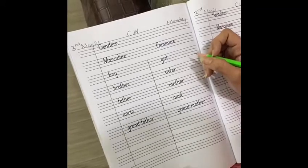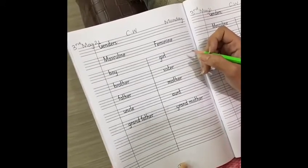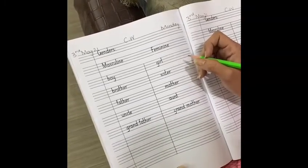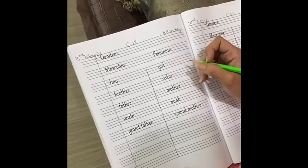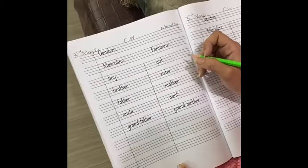Kids, male means he. Do you remember I told you during online classes that we use he for boys and we use she for girls? He is used for boys and it means masculine. And female means she. We use she for girls. It's feminine.